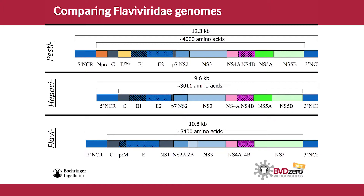The Hepaciviruses are the smallest group and show the most similarity to the Pestiviruses, particularly BVD. The Flaviviruses seem a little different — within that group, the tick-borne viruses have a longer 3' untranslated region than the mosquito group. BVD virus is important because it has two very unique proteins: the N-pro, which is the N-terminal protease, and the E-RNS, an envelope glycoprotein where RNS stands for ribonuclease-secreted, giving it important functions in relation to the cell and the host.